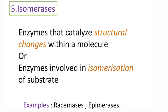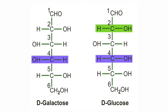Coming to class 5 — isomerases. These enzymes catalyze structural changes within a molecule, or enzymes involved in isomerization of a substrate. Examples include racemases and epimerases. An example is C4 epimerase: glucose and galactose are C4 epimers — they have the same number of atoms but differ in the arrangement at carbon number 4. C4 epimerase can convert glucose to galactose and galactose to glucose, interconverting these isomers.